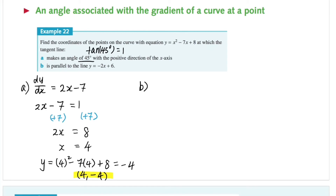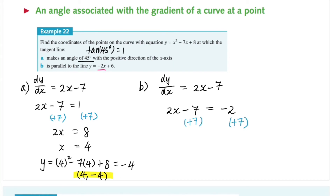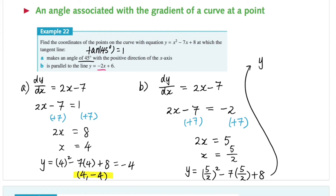In part B, when the tangent line is parallel to the line y equals negative 2x plus 6, if it's parallel the gradient is the same as the linear function, which is negative 2. So we set dy/dx equals 2x minus 7 equal to negative 2. Adding 7 to both sides gives 2x equals 5, so x equals 5/2. Substituting back into the original equation: y equals (5/2)² minus 7 times (5/2) plus 8, which gives y equals negative 13/4. So at the point (5/2, −13/4) the tangent line is parallel to the given linear function.